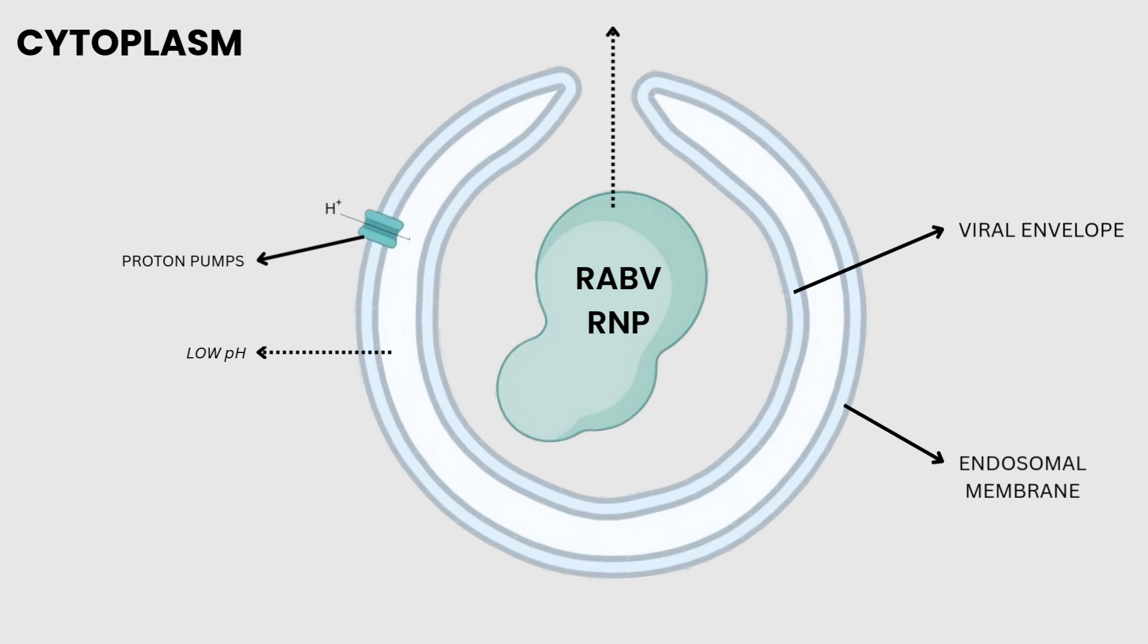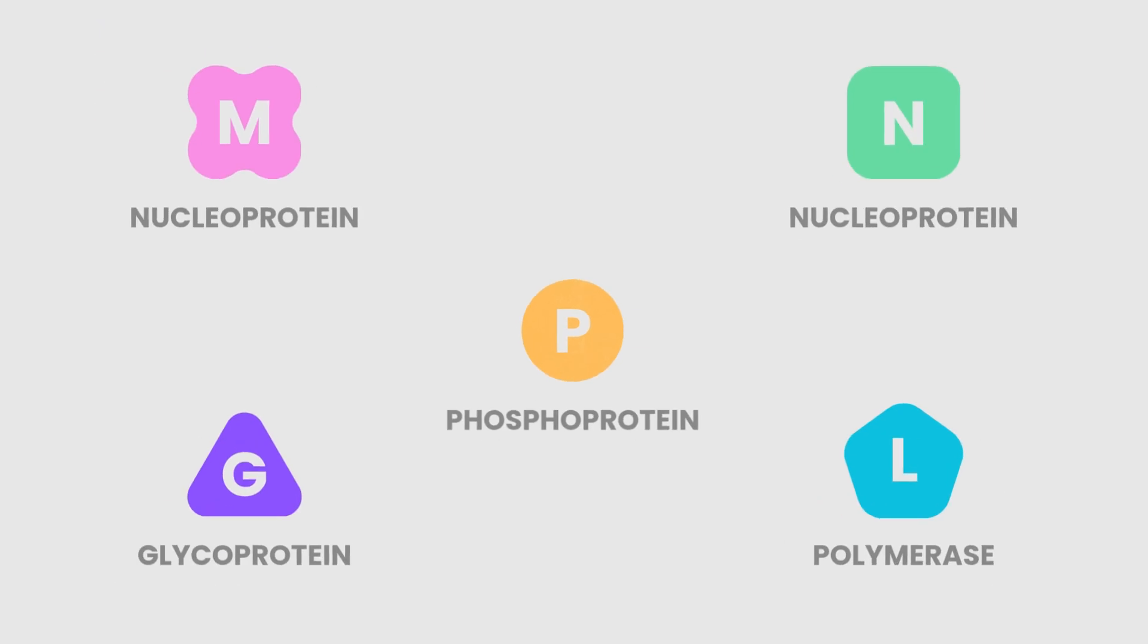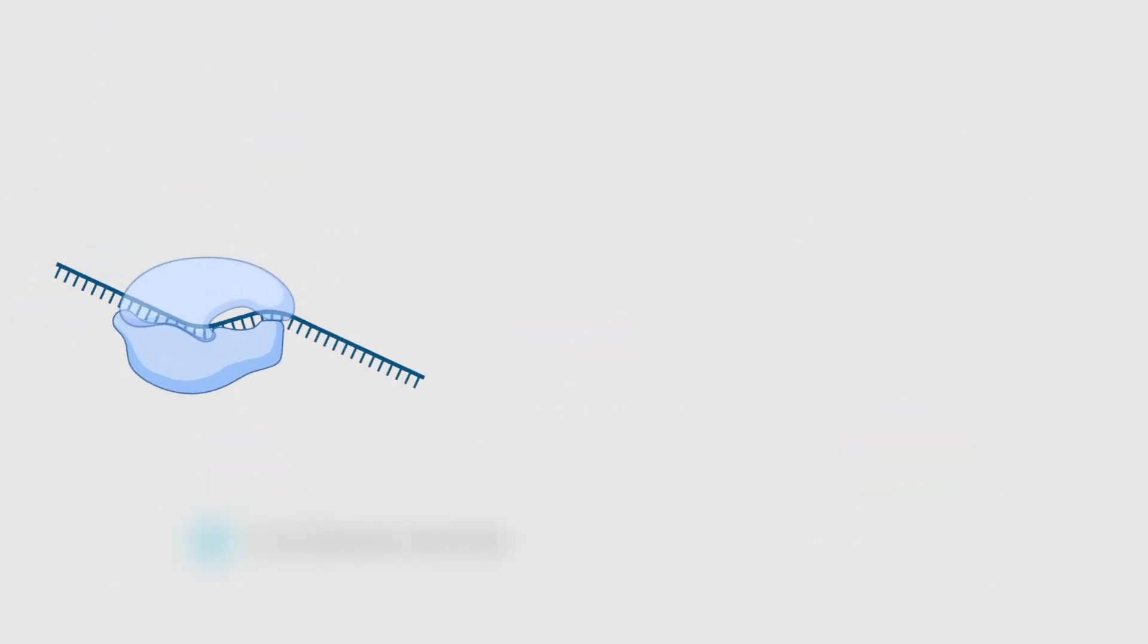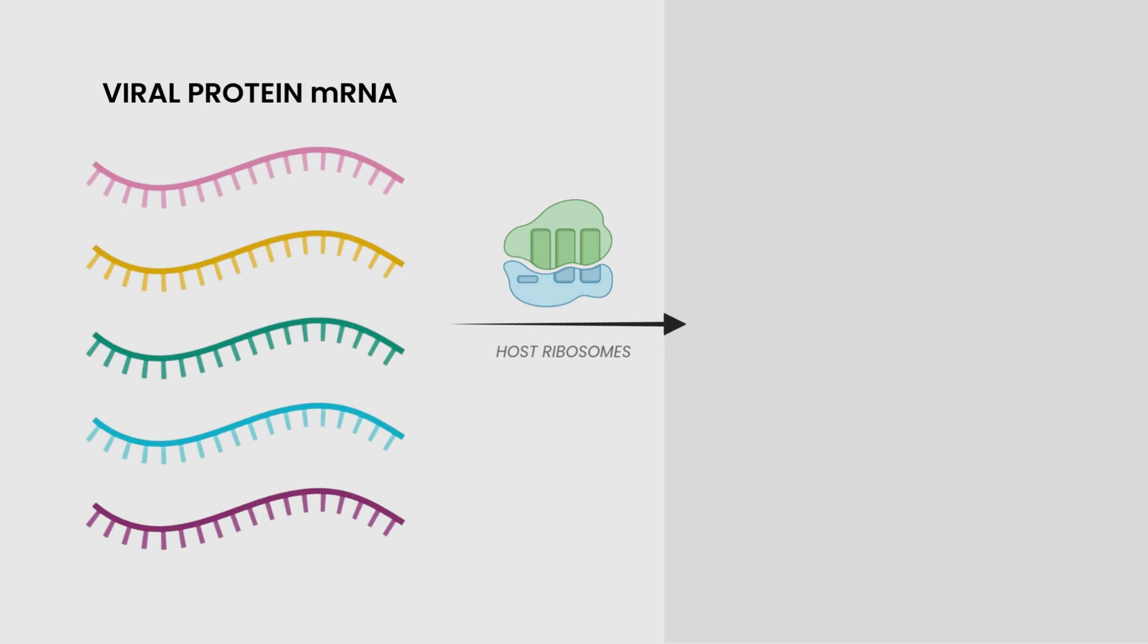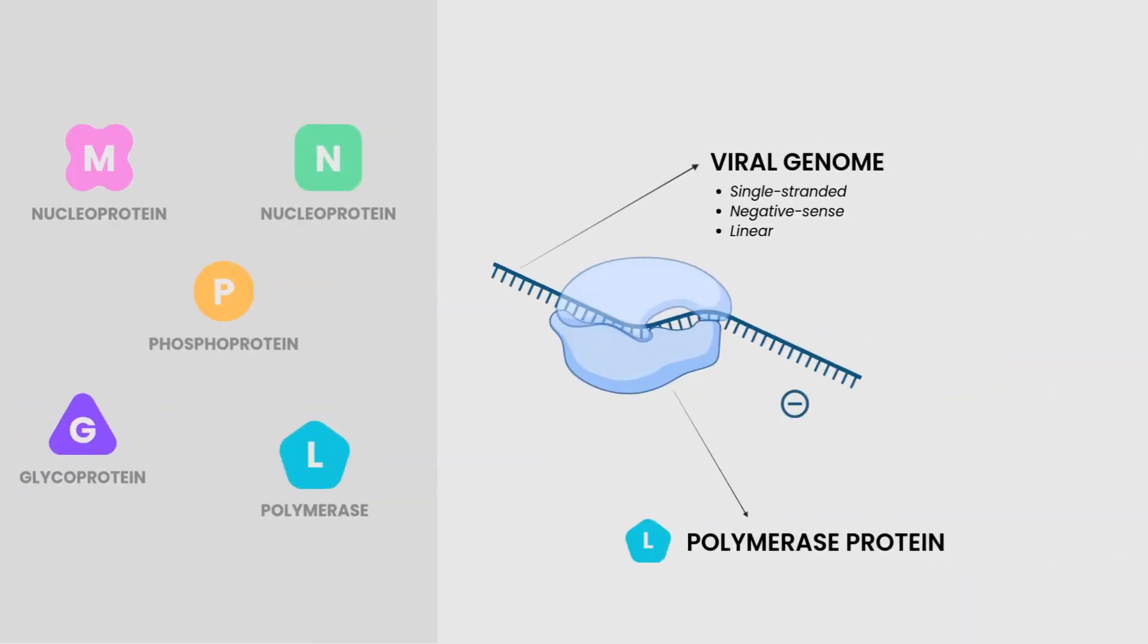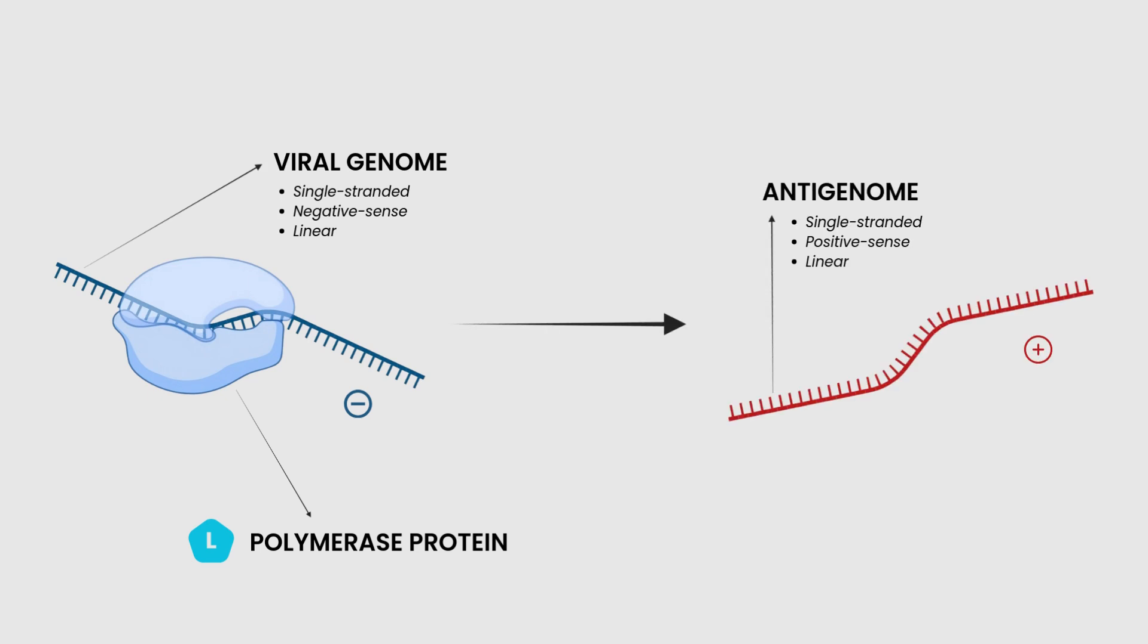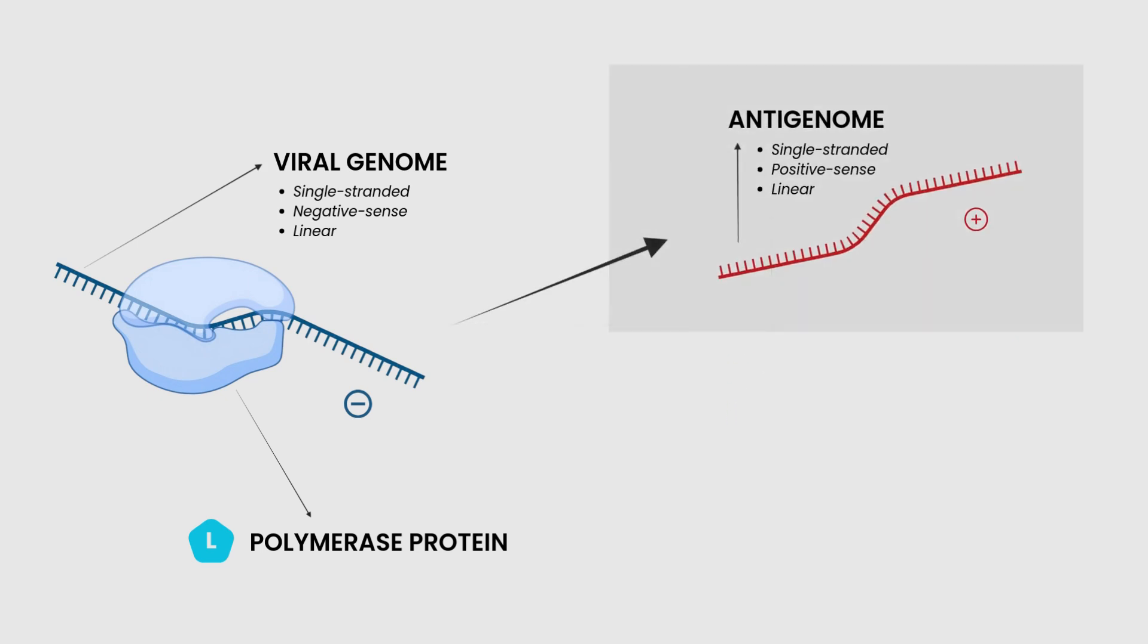Now, with access to the host machinery, RABV produces these key components. First, the viral polymerase uses the negative sense RNA genome as a template to transcribe five mRNA strands. Host ribosomes translate these into the viral protein components mentioned earlier. Next, the polymerase produces full-length positive sense antigenomes. These serve as templates for new negative sense viral genomes.